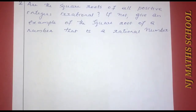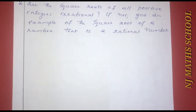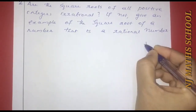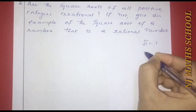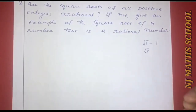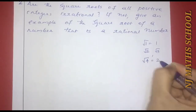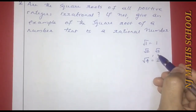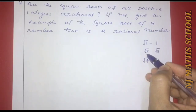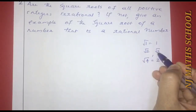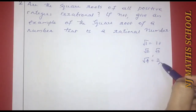Second question: are the square roots of all positive integers irrational? If not, give an example of the square root of a number that is rational. Consider: √1 = 1, √2 is not an integer, √3 is not an integer, √4 = 2. So √2 and √3 are irrational, while √1 and √4 are rational.